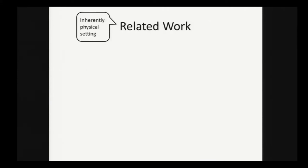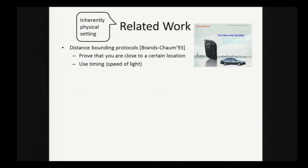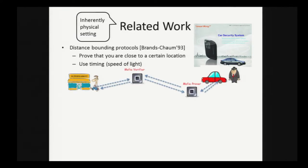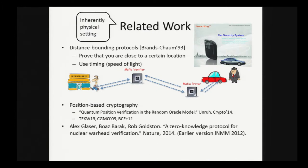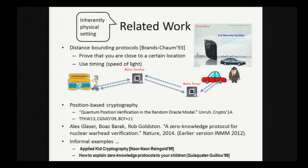There is related work in this realm. For instance, distance bounding protocols. One application is with keyless car security systems with passive keyless entry. You want to prevent a mafia attack where an imposter verifier interacts with your pocket and forwards messages to an imposter prover who might unlock your car as you're walking to the supermarket. The generalization is position-based cryptography. We saw a paper on that in this conference. The work of GBG-12 I mentioned earlier, and various informal examples of zero knowledge protocols for these kinds of claims in the literature.